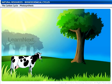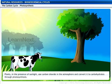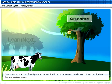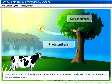The cycle starts in plants. Plants, in the presence of sunlight, use carbon dioxide in the atmosphere and convert it to carbohydrates through photosynthesis.